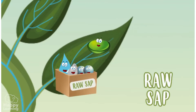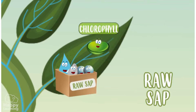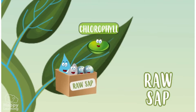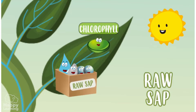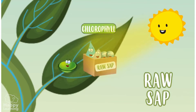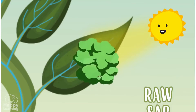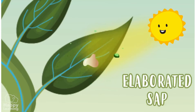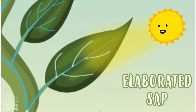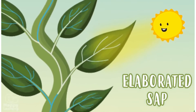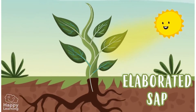Now it's chlorophyll's turn! The chlorophyll in the leaves has all the necessary ingredients for photosynthesis to take place, and when it receives sunlight, the process begins by transforming the raw sap into elaborated sap, which also circulates around the plant and works as food.